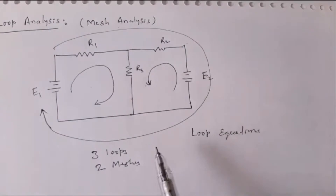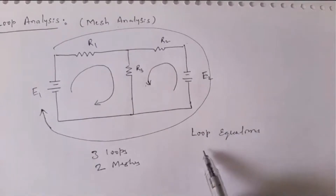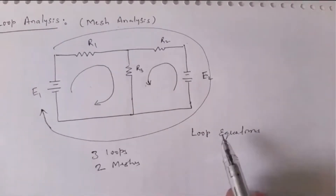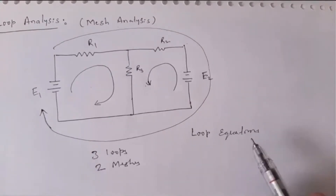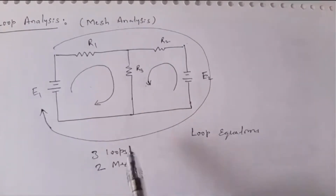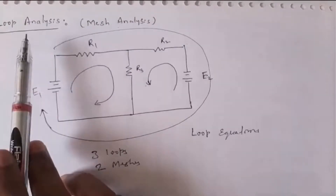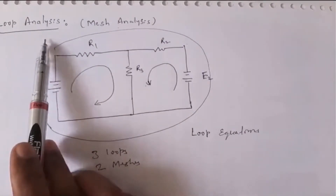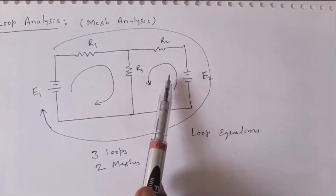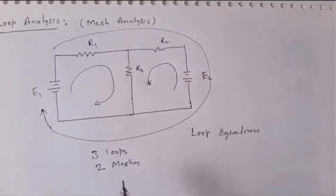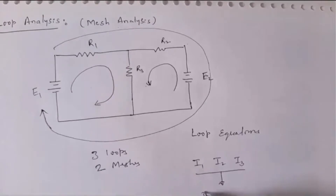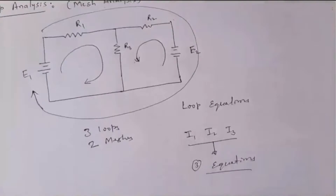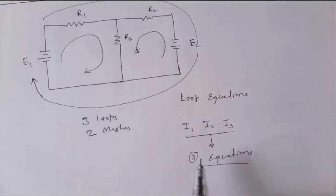These equations will be solved simultaneously — either using a normal approach or using determinant methods. An important point: when solving any problem using loop analysis, how many unknowns there are, that many equations must be there. For example, if there are three unknowns i1, i2, i3, you need three equations — that many times you apply KVL to get the loop equations.